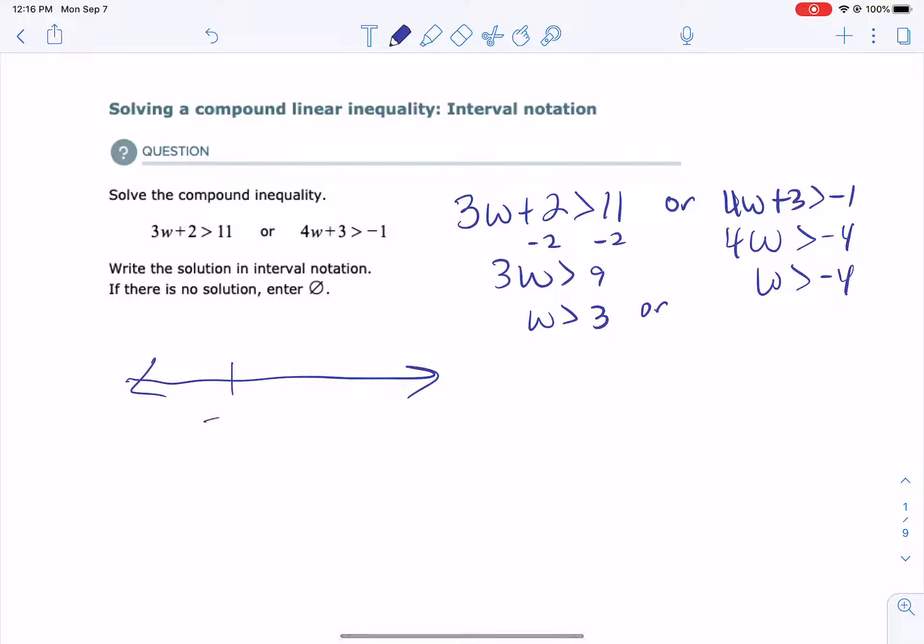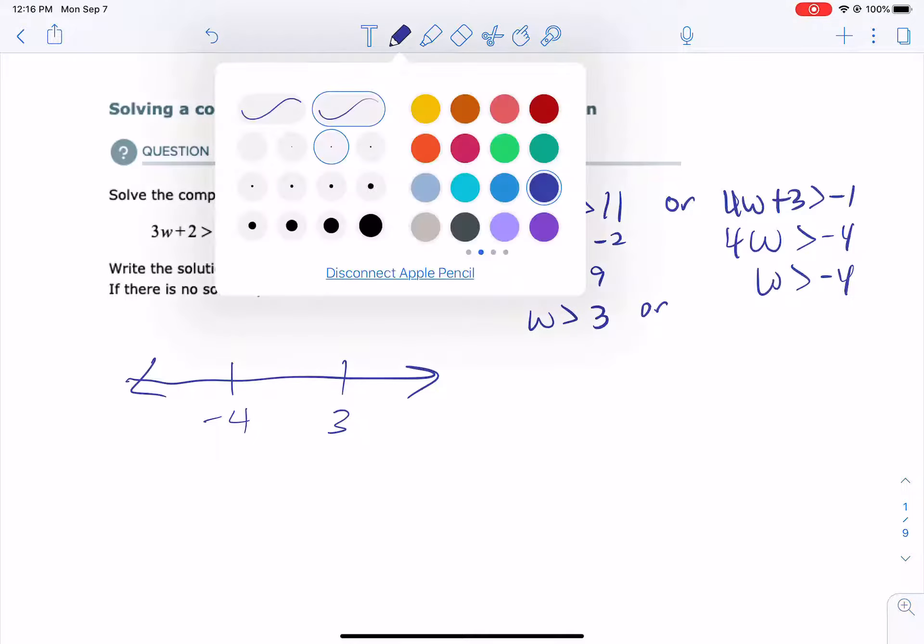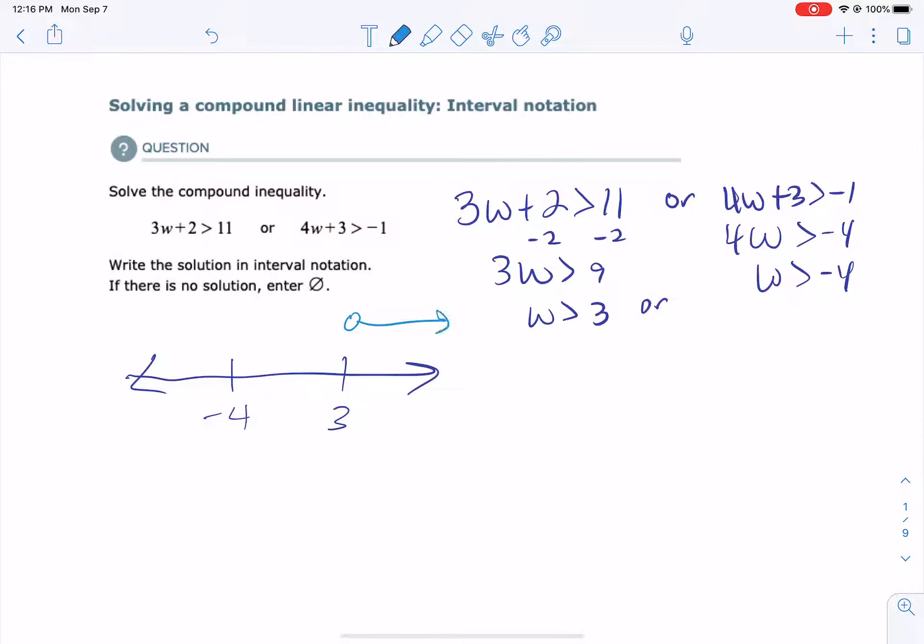Now for an OR, we are looking for just the combination of everything that's written. So greater than 3 looks like that, and negative 4 looks like that. Now if we put them on the same number line and color them in, if we combine the two, it looks like what I have here. The 3 greater than 3 is just overlapped by the greater than negative 4. So our answer is that W is greater than negative 4. Now if you put in an interval notation like they've asked, we would go from negative 4 in a parenthesis to designate that there's an open circle, and we would go to infinity. So that is your answer in interval notation.